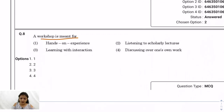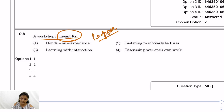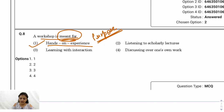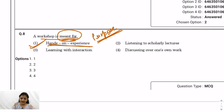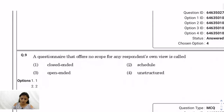Question 8: A workshop is meant for — the question asks about its purpose. The answer is hands-on experience. Hands-on experience means you learn by doing things yourself rather than just reading or observing. So the correct answer is option 1: hands-on experience.